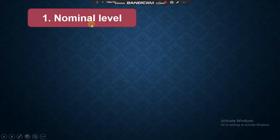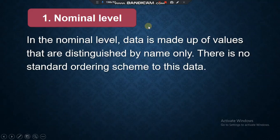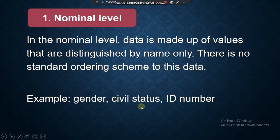Let's have first nominal level. In the nominal level, data is made up of values that are distinguished by name only. There is no standard ordering scheme to this data. Example: gender, civil status, ID number.